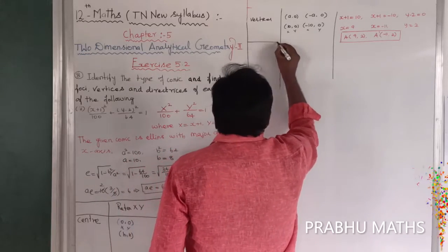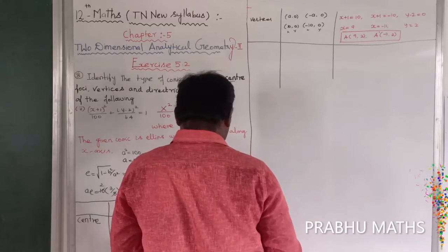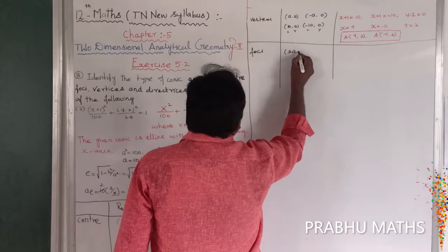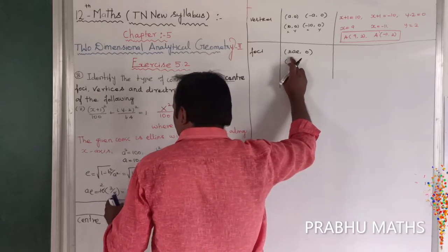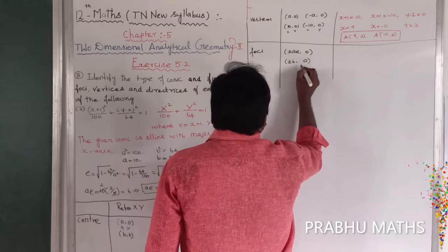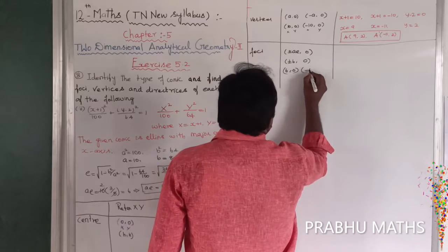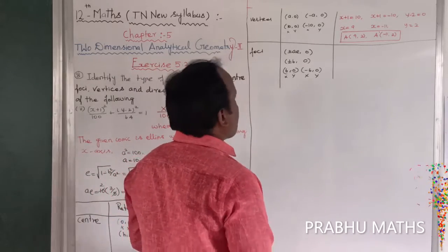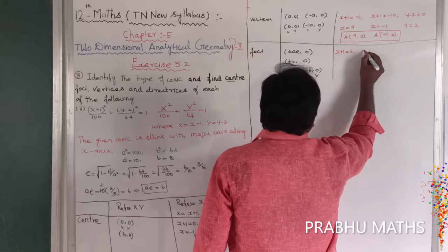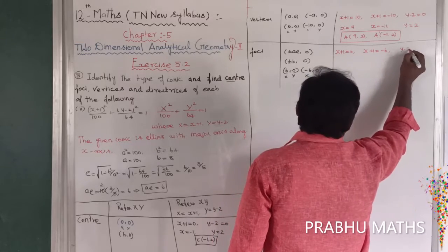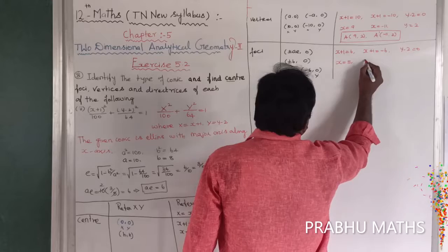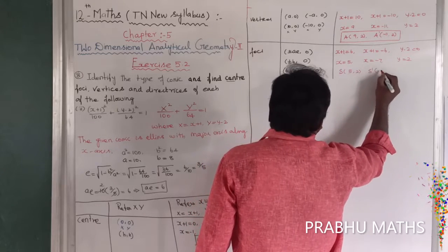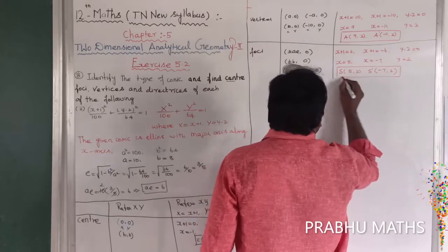Next, find the foci. The foci are at (±ae, 0) = (±6, 0) in capital X, Y. Converting: x + 1 = 6 gives x = 5; x + 1 = -6 gives x = -7. y - 2 = 0 gives y = 2. So S(5, 2) and S'(-7, 2). Focus is completed.